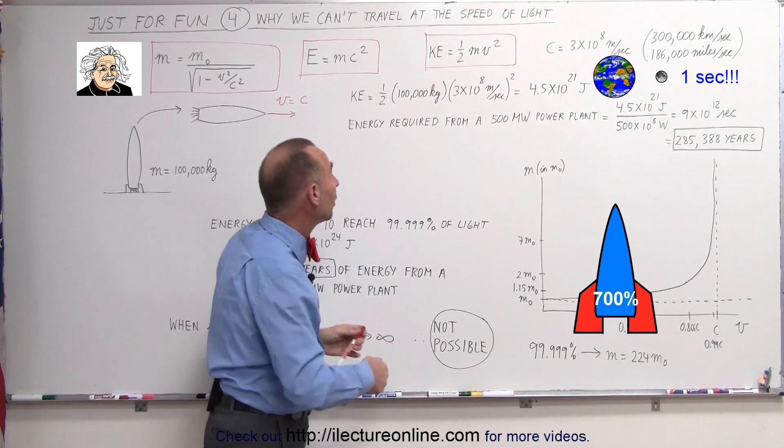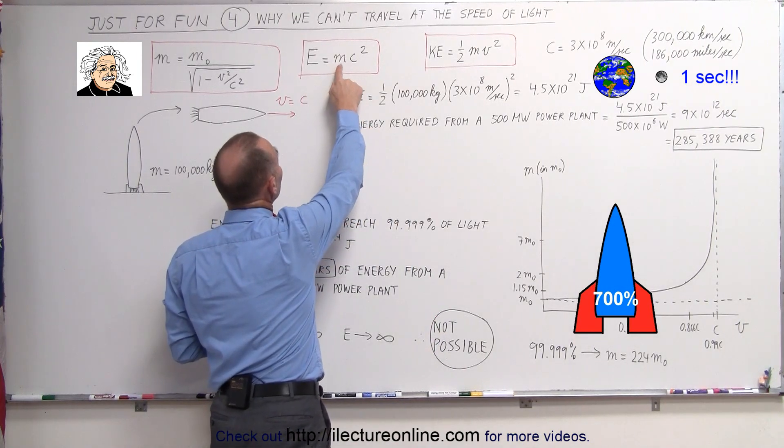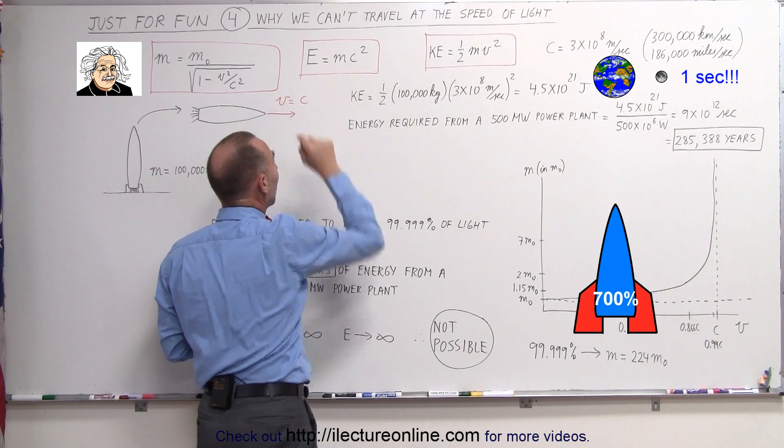Where does that mass come from? Well, Einstein realized that E equals MC squared. It just simply requires energy.